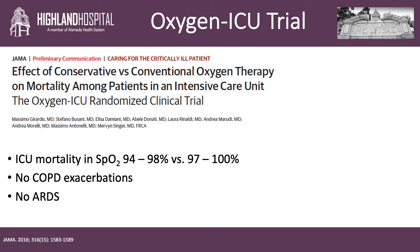The Oxygen ICU trial was from JAMA 2016 and assessed the effect of conservative versus conventional oxygen therapy on mortality in patients admitted to the ICU. The plan was for about 660 patients, but the trial was stopped early after the hospital in Italy suffered damages related to an earthquake. So the results have to be taken with a grain of salt. Patients were randomized to either receive oxygen to maintain low normoxic values versus high normoxic values, defined as 94 to 98 percent versus 97 to 100 percent.